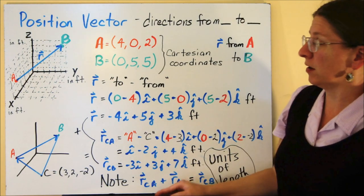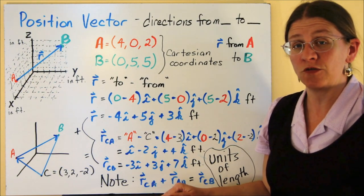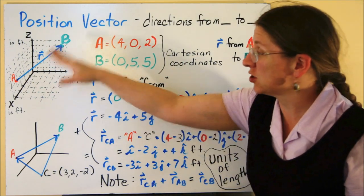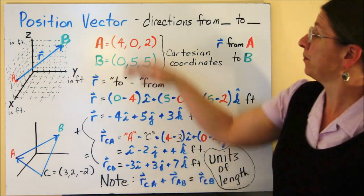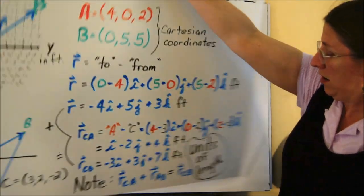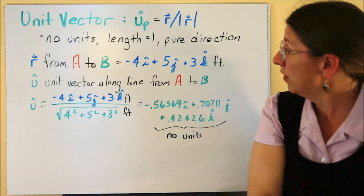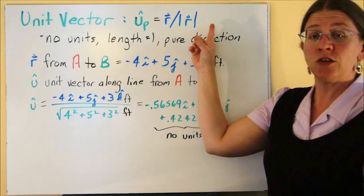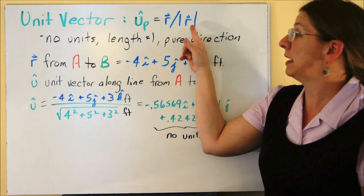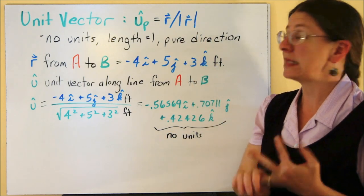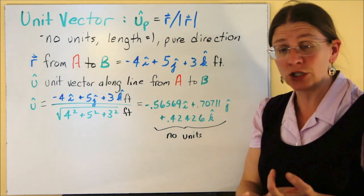Your units here, all of them, are units of length for most position vectors because our positions are usually measured in length. The unit vector is the position vector divided by its own magnitude, by the magnitude of R. It has no units, has length equal to 1. It is a pure direction.